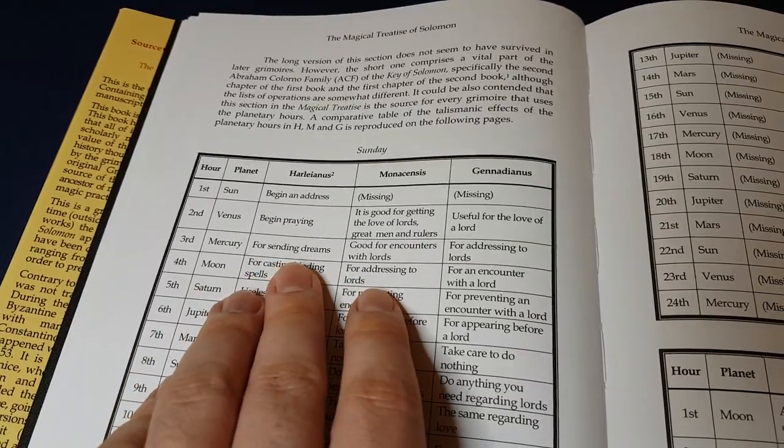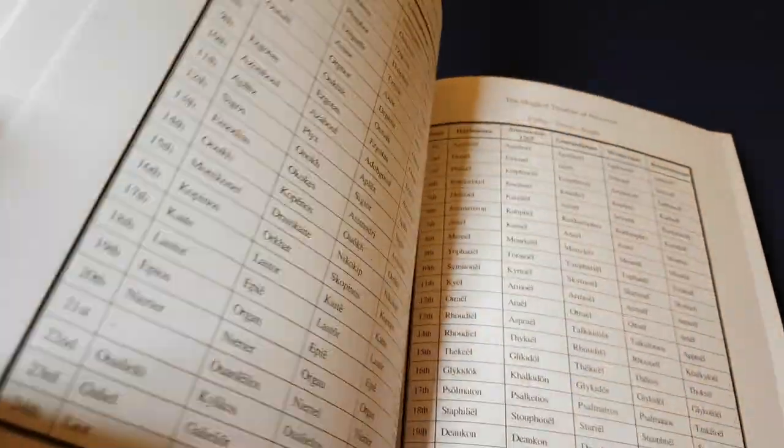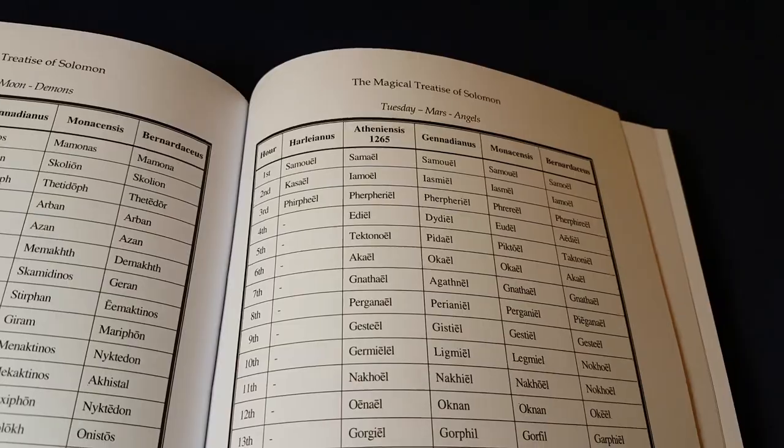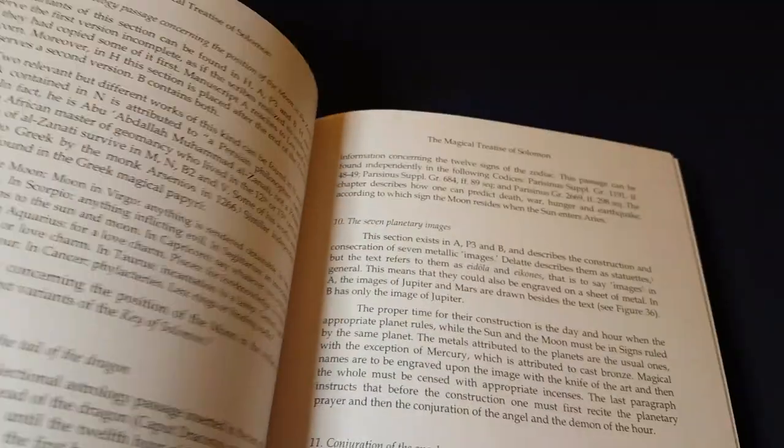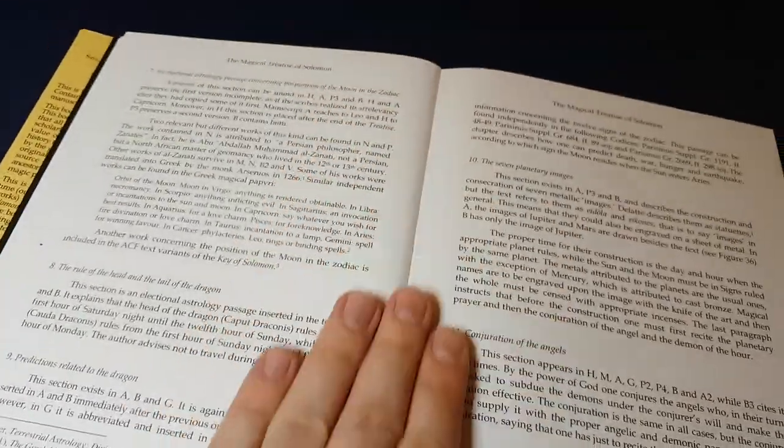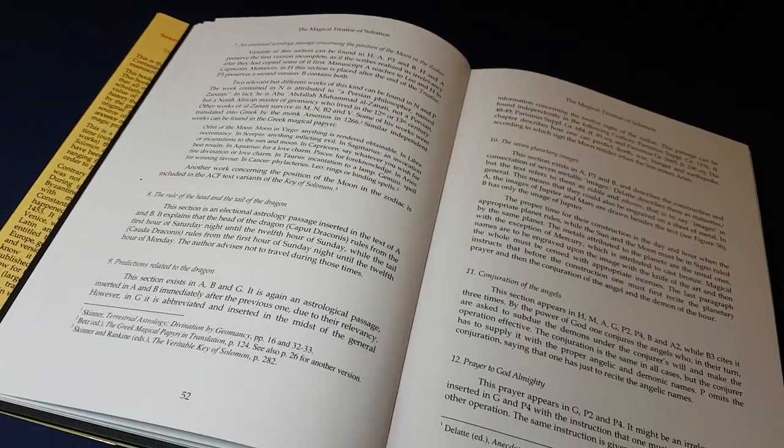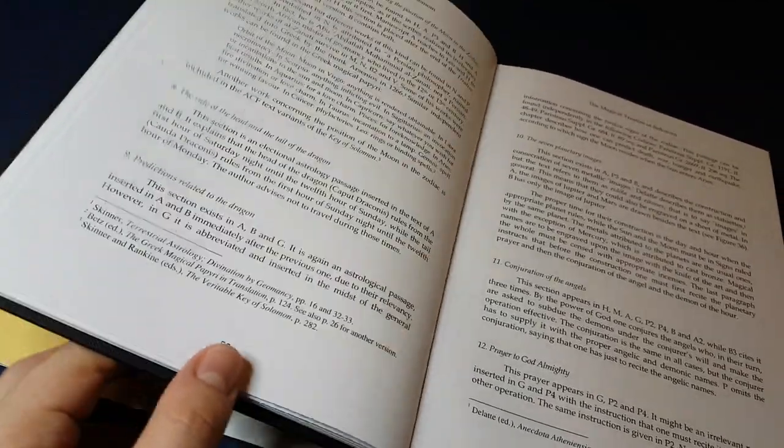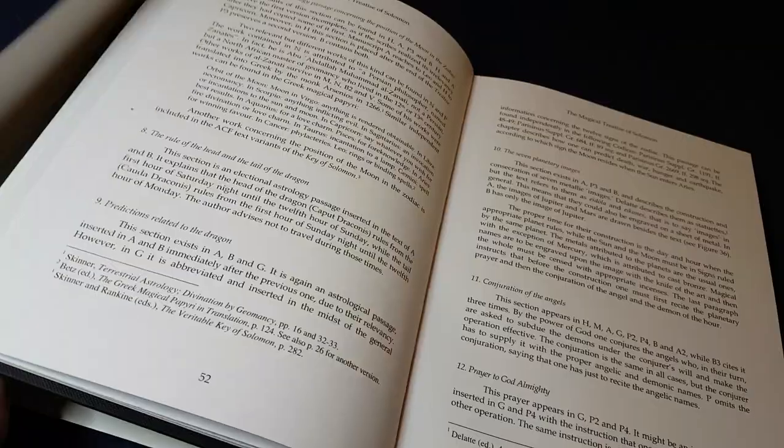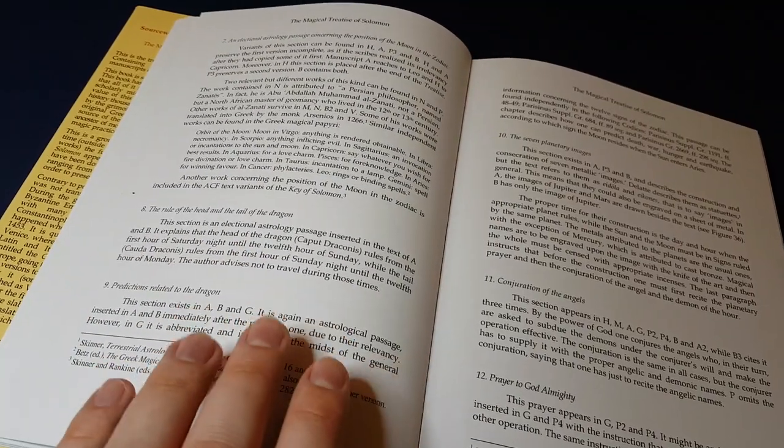He also talks about the different information or conflicting information depending on the version. He put all that into tables. There's only one thing I'm not very fond of, other than the fact that it's a Golden Horde book and I don't particularly like the way their books look.